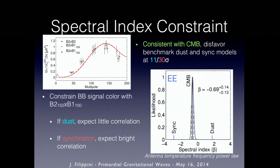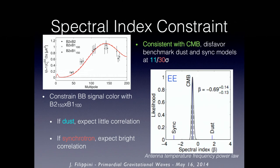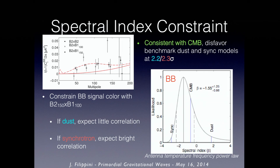We also performed a spectral index constraint using BICEP-2 at 150 GHz and BICEP-1 at 100 GHz in cross-correlation. For E-modes, you get exactly the expected CMB spectral index value, ruling out a pure dust or synchrotron model at many sigma — this is what we expect. For B-modes, where statistical noise is much higher, the signal is consistent with a CMB spectral index to within one sigma, and single-component dust or synchrotron models are disfavored at about two sigma. It's a crude but encouraging consistency test: the signal really is the right color.